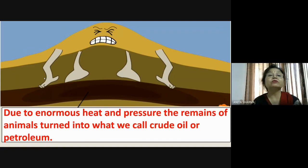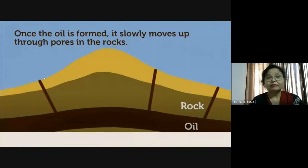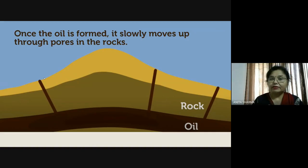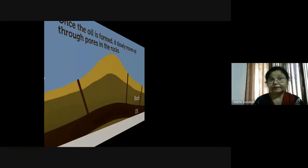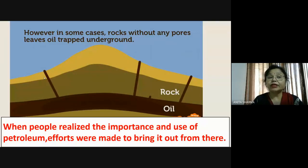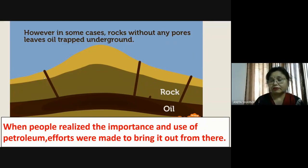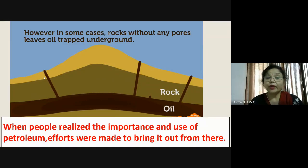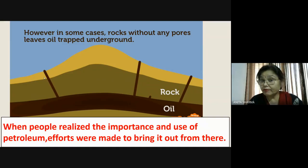Once the oil is formed, it slowly moves up through the pores in the rock. However, in some cases, rocks without any pores leave oil trapped underground — where there was no space for the oil to reach the surface, it remained trapped. When people realized the importance and use of petroleum, efforts were made to bring it out. Any useful thing we cannot leave like that — we have to use it.